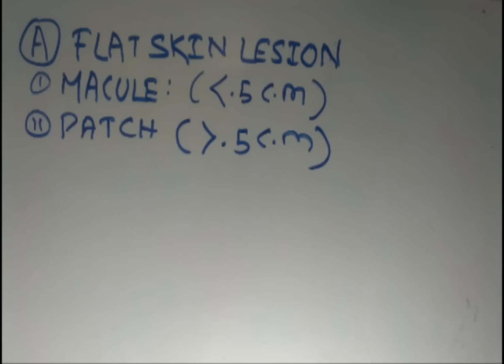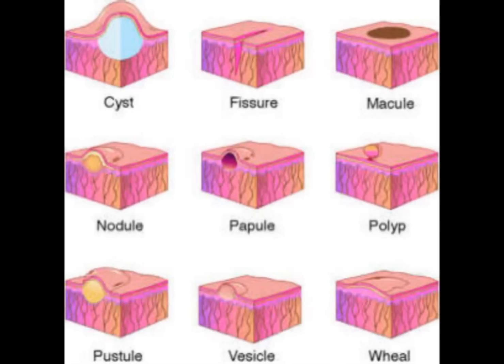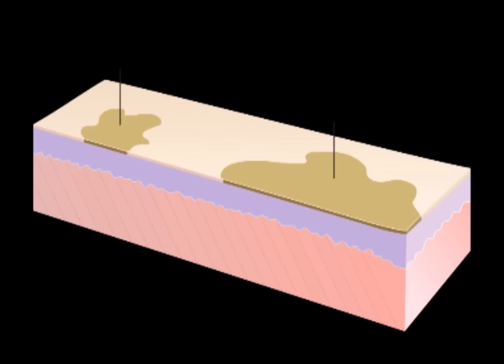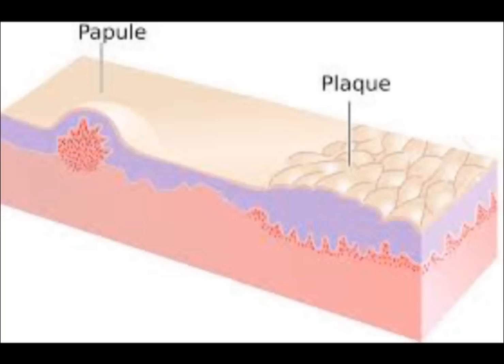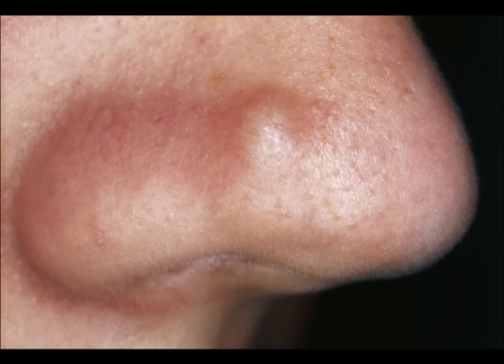Macules are circumscribed, flat changes in color due to hyperpigmentation or hypopigmentation of the lesion. Papules are small, solid elevated lesions due to hyperplasia, and big-sized papules are called nodules.